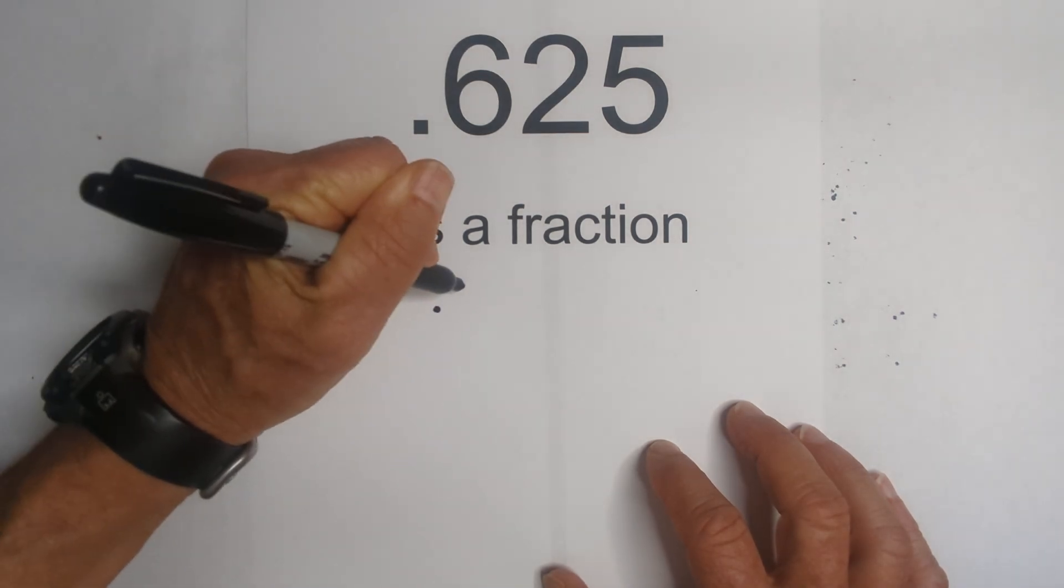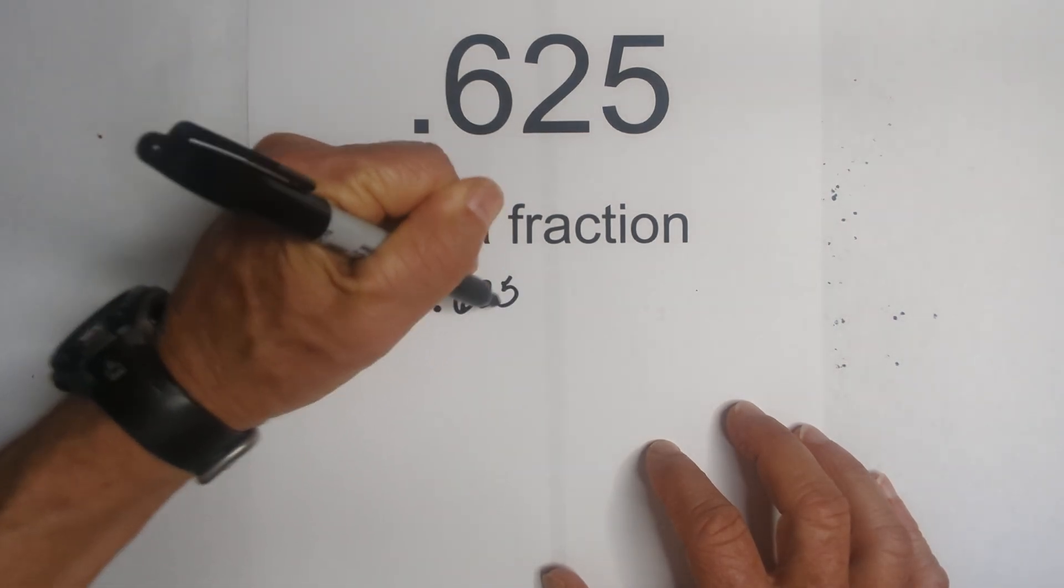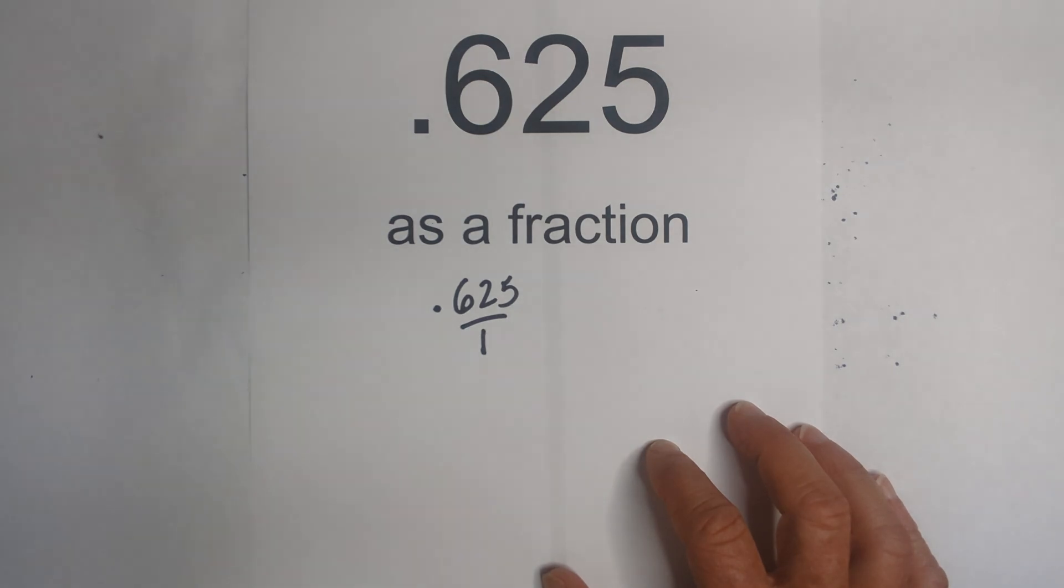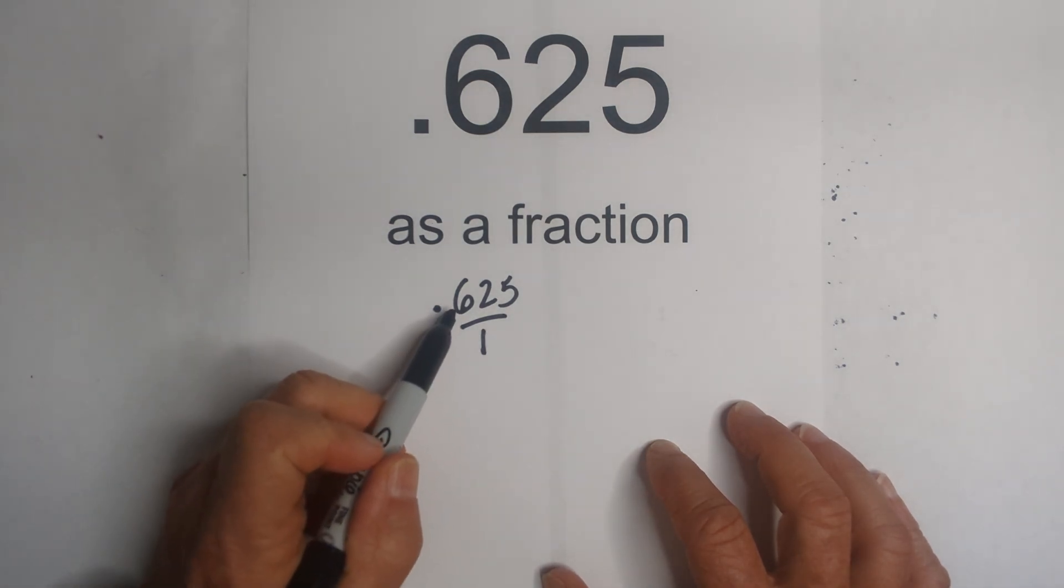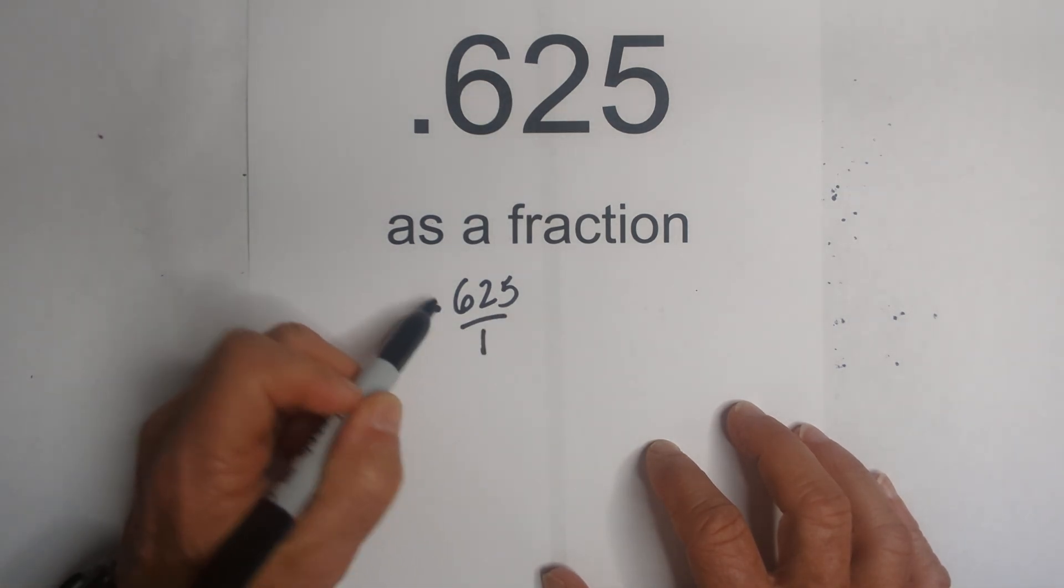So step one is I'm going to place .625 over one. I now need to convert this to a whole number with no decimal.